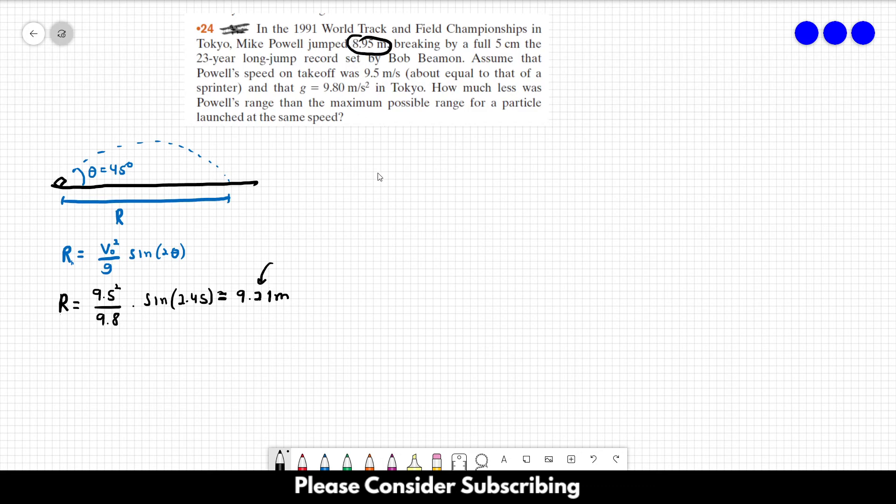So this delta X is equal to 9.21 minus 8.95, which gives us 0.259 meters, about 26 centimeters. This is the answer of the exercise.